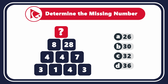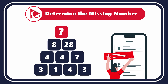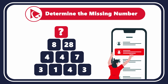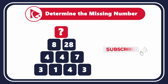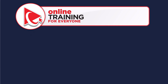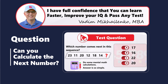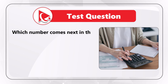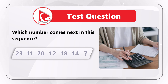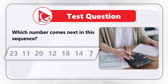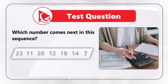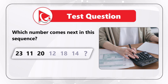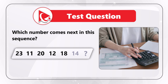I am confident in your problem-solving abilities and encourage you to tackle this question independently. Afterward, don't forget to share your answer in comments so I can give you my feedback. Thanks for taking part in this, and best of luck. What's interesting about the next question is that it truly tests your analytical skills. You need to determine which number comes next in the sequence. You're presented with a sequence of 6 numbers where the 7th is missing: 23, 11, 20, 12, 18, 14.